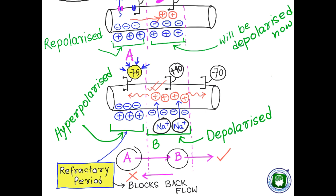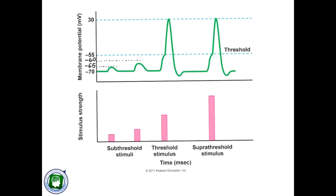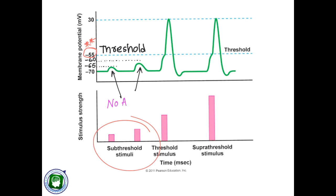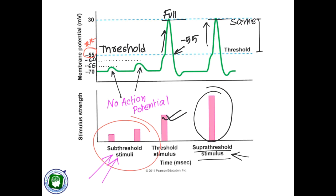Another important property of action potential is the all-or-none law. If the strength of the stimulus is less than enough to reach the threshold level of minus 55 millivolt, there will be no action potential — it is a sub-threshold stimulus. But when the stimulus is strong enough to reach minus 55 millivolt, an action potential of full strength will fire. If you apply a stimulus of much greater strength — a supra-threshold stimulus — the action potential still remains of the same strength, as that is the maximum strength with which it can fire. So either an action potential generates with full strength or it does not generate at all — this is the all-or-none law.